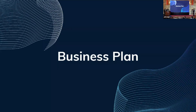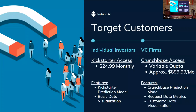Let me walk you through our business plan. We've segmented our target customers into two groups. The first is individual investors, who get access to the Kickstarter prediction model and basic data visualization, with a subscription fee of around $25 per month. The second segment is VC firms, who get access to the Crunchbase prediction model, can request data metrics and custom data visualization, and are priced at around $900 per month with a variable quota.